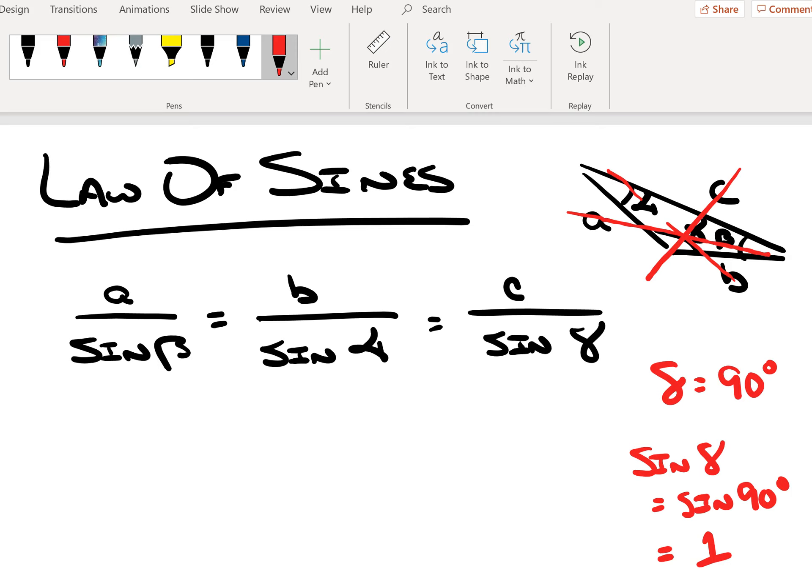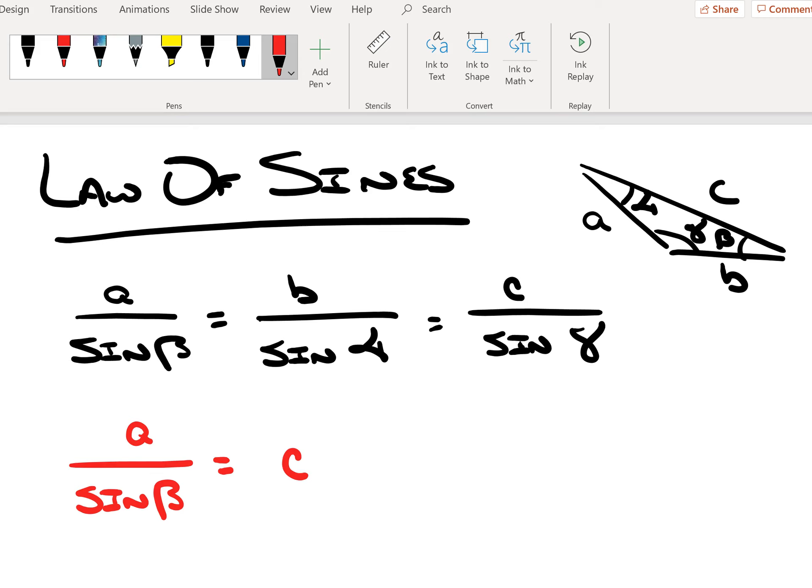If we pair these up, we end up with two expressions. We end up with A over the sine of beta equals C over sine of gamma, but sine of gamma is 1, so that equals C. We also have B over sine of alpha equals C. So we have ways of extracting the lengths of the sides if we know the hypotenuse and the internal angle measurements of the right triangle.